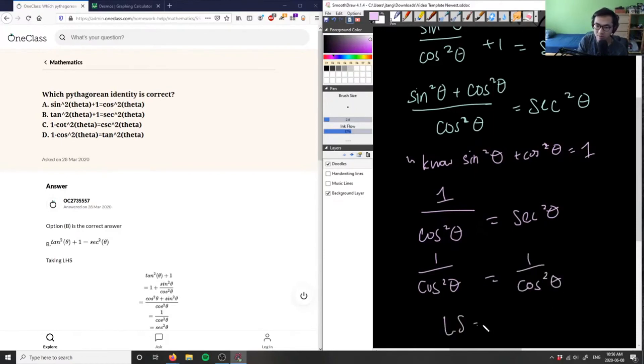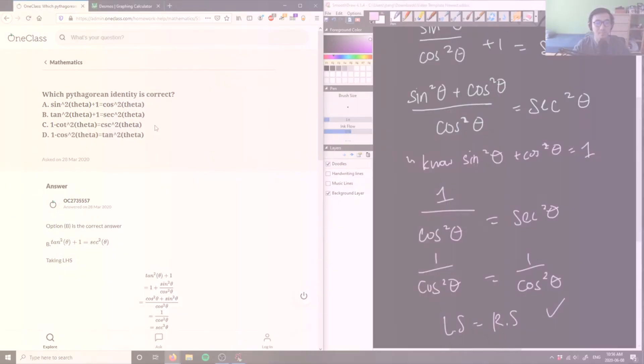So this solution is correct - left side equals right side. We know that secant is the reciprocal of cosine. So the solution here is correct, and B is the correct Pythagorean identity.